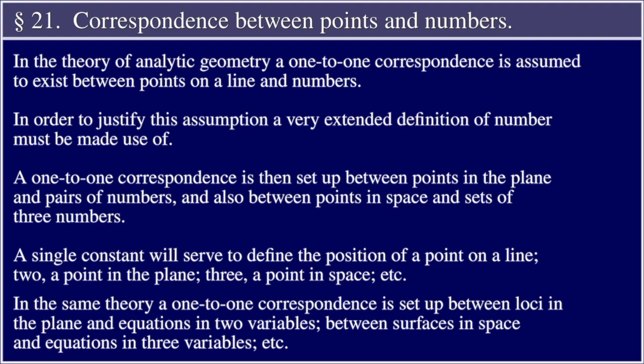Section 21, Correspondence between points and numbers. In the theory of analytic geometry, a one-to-one correspondence is assumed to exist between points on a line and numbers. In order to justify this assumption, a very extended definition of number must be made use of.